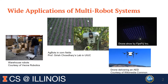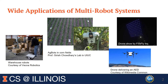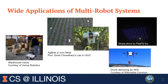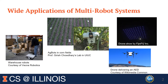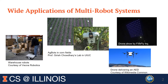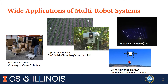Our work is motivated by the wide applications of multi-robot systems in recent years. Roombas have been used in transporting inventories in warehouses. In agriculture, there is research on using small ground vehicles for surveillance, disease monitoring, and weeding and farming. We've also seen plenty of drone shows, and drones being used for medical and package deliveries.